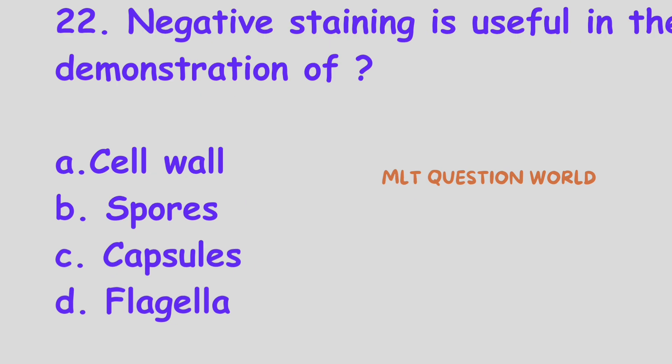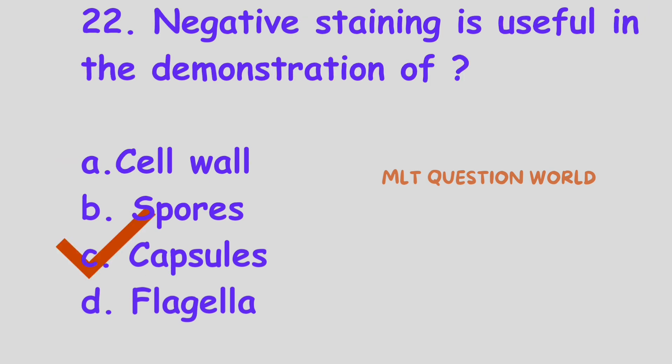Question number 22. Negative staining is useful in the demonstration of: Option A, Cell wall; Option B, Spores; Option C, Capsules; Option D, Flagella. Negative staining is used for the demonstration of capsules. The right answer is Option C, Capsules. Negative staining is useful for the demonstration of capsules.